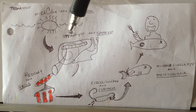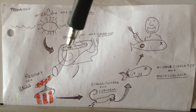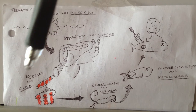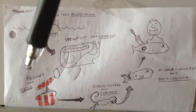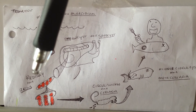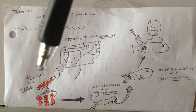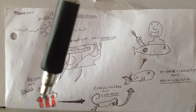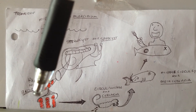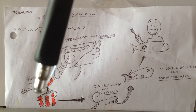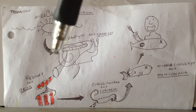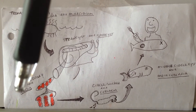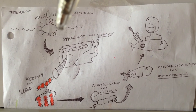So after the straw cyst, it starts forming these rediae, or red guys, and those are just rediae germ cells, and they form these little red guys with only a mouth and a digestive tract. Notice they don't have the sucker or the tail or any cilia yet.